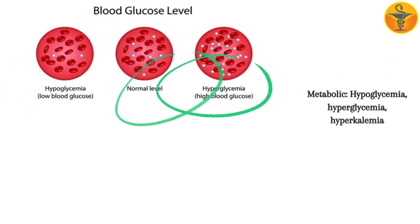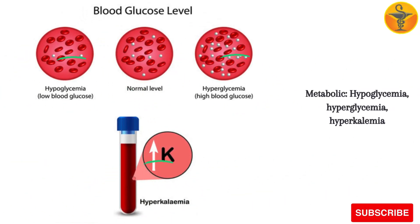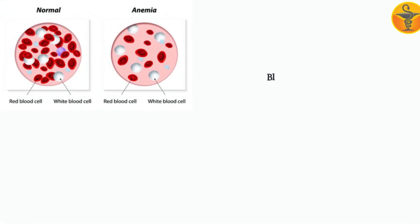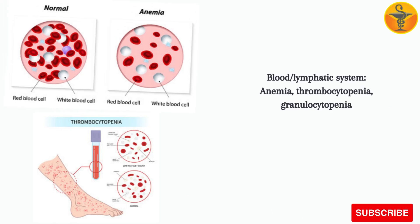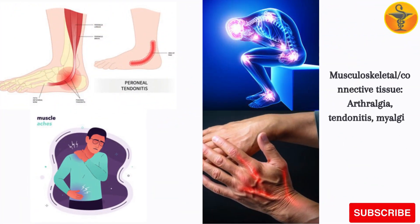Metabolic: hypoglycemia, hyperglycemia, hyperkalemia. Blood and lymphatic system: anemia, thrombocytopenia, granulocytopenia. Musculoskeletal and connective tissue: arthralgia, tendinitis, myalgia, skeletal pain.